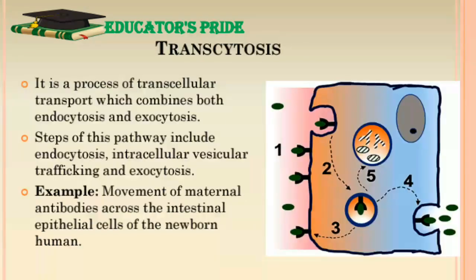The third type is transcytosis, a process of transcellular transport combining both endocytosis and exocytosis. It is employed to import an extracellular ligand from one side of a cell, transport it across the cytoplasm, and secrete it from the plasma membrane at the opposite side. Common steps include endocytosis, intracellular vesicular trafficking, and exocytosis. An example is the movement of maternal immunoglobulins (antibodies) across the intestinal epithelial cells of the newborn human.